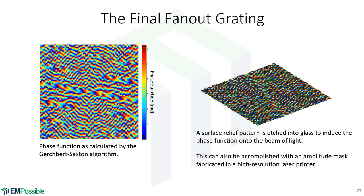To fabricate this, we etch the phase profile into glass. Where the grating has peaks, light travels through more glass and accumulates more phase. We look at the phase map and convert it into whatever profile needs to be etched into the glass. You don't see pickaxes — it looks much more like mountain ranges. That's one way pattern fan-out gratings are designed, and there are many other algorithms.